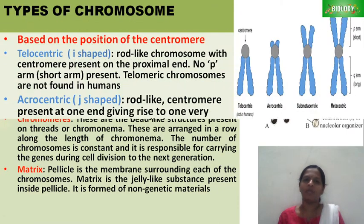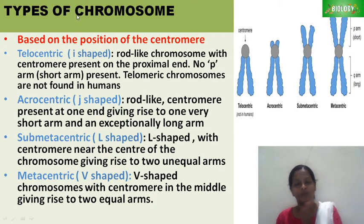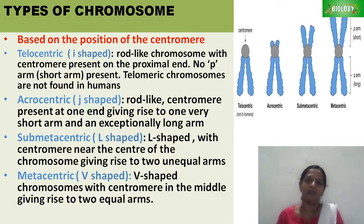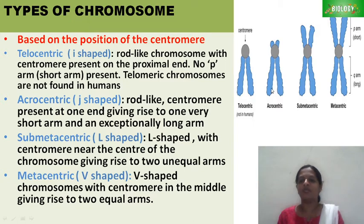Now, the types of chromosomes. There are various types of chromosomes. We can classify them based on the position of the centromere, based on the function of the chromosome, and based on the number of centromeres. First, we will see the types of chromosome based on the position of the centromere. Based on the position of the centromere, there are four types: telocentric, acrocentric, submetacentric, and metacentric.